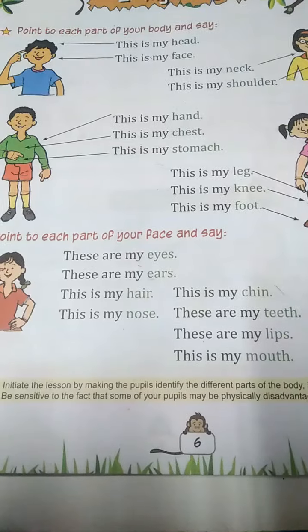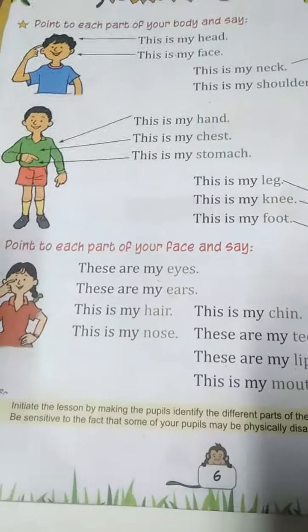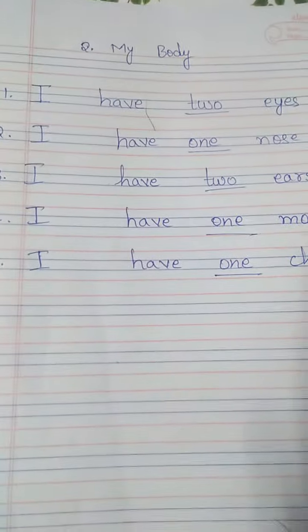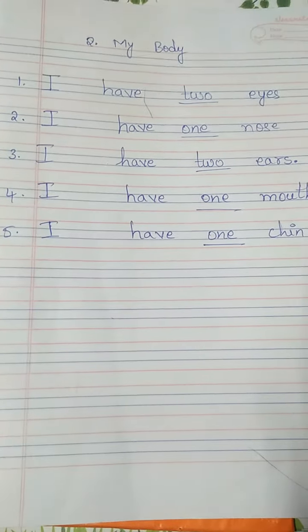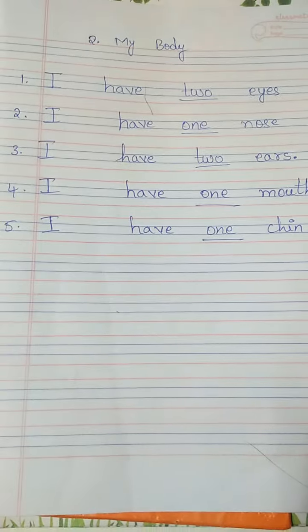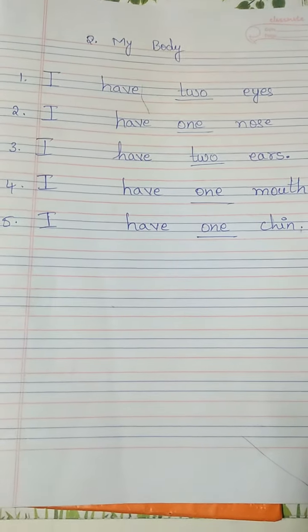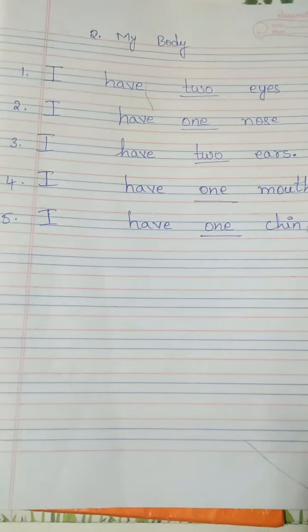Now an exercise from your term book related to this — just have a look at it. I have two eyes, I have one nose, I have two ears, I have one mouth, I have one chin. These are fill-in-the-blanks.